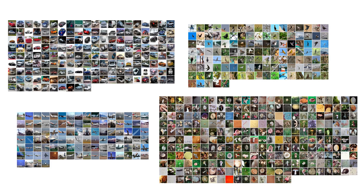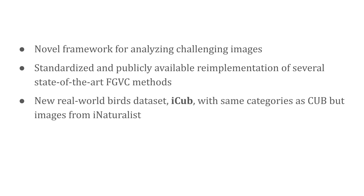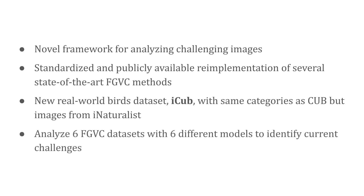In this work, we try to understand these elusive and difficult images in the context of fine-grained recognition. Our paper makes several contributions. We develop a framework identifying and analyzing challenging images using three distinct difficulty metrics that aggregate predictions from multiple models. We provide a standard training procedure and implementation of several state-of-the-art FGVC methods for direct and fair comparison. We create a new evaluation dataset called iCUB, meant to be used as an additional source of test images for models trained to recognize the 200 bird species in the CUB dataset, with images collected from iNaturalist. We analyze six FGVC datasets with predictions from six different model types using our proposed framework, and show that there are specific challenges still to be solved in FGVC.